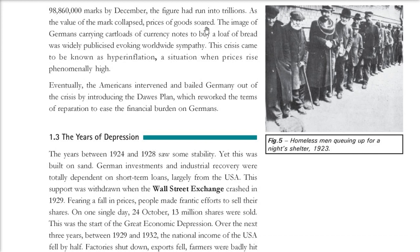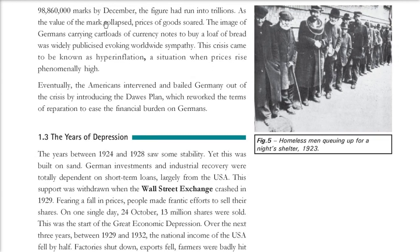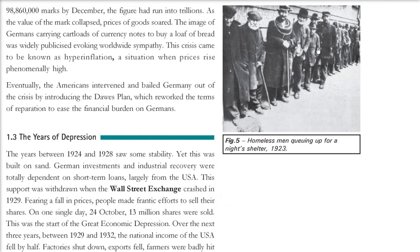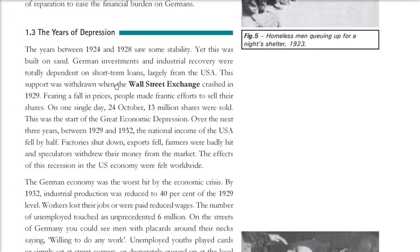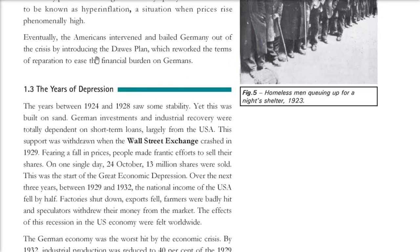Good prices soared to all-time highs. America intervened and bailed out Germany with a crisis plan called the Dawes Plan, providing some relief. Images from the time show homeless Germans queuing for night shelters. There were years of depression. After this, there was some stability because the Americans came to the rescue.